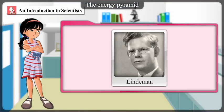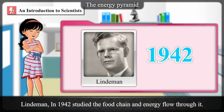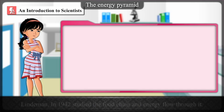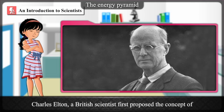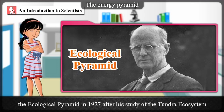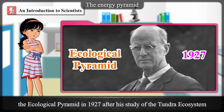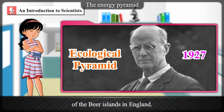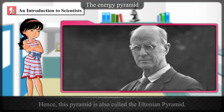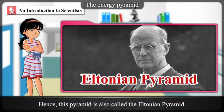Lindeman, in 1942, studied the food chain and energy flow through it. Charles Elton, a British scientist, first proposed the concept of the Ecological Pyramid in 1927 after his study of the Tundra ecosystem of the Beer Islands in England. Hence, this pyramid is also called the Eltonian Pyramid.